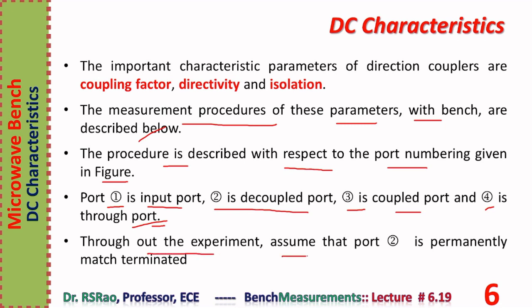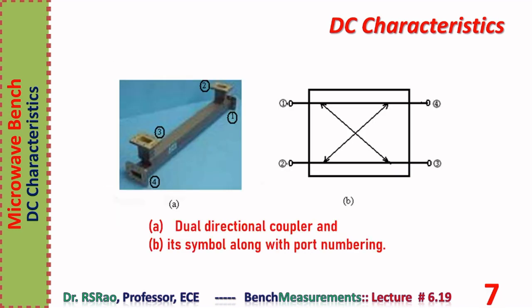Throughout the experiment, assume that port two, the decoupled port, is permanently match terminated. A picture of the directional coupler and its symbol along with the port numbering are shown. With respect to this port numbering, the procedure for measuring directional coupler performance indices is described.